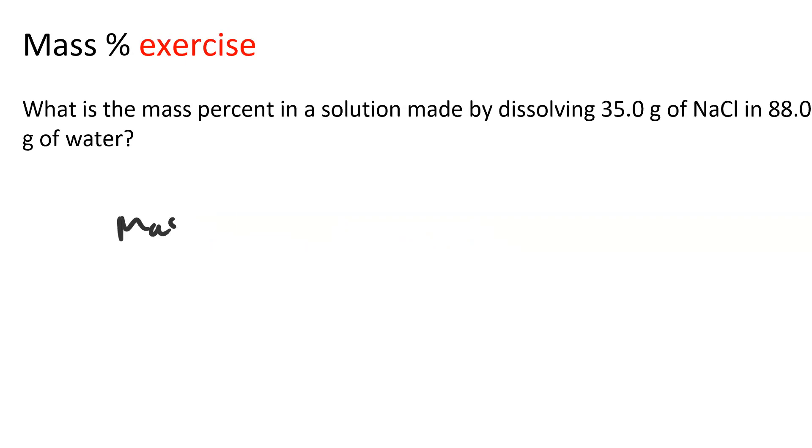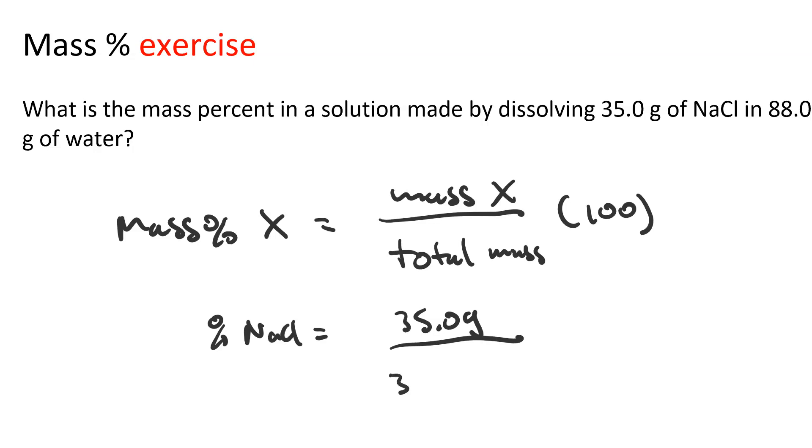So we solved this by saying the mass percent equals the mass of solute over the total mass times 100. So if we're doing it for sodium chloride, we'd have 35.0 grams over 35.0 plus 88.0 grams times 100. And when I work that out on my calculator, I get 28.5%.